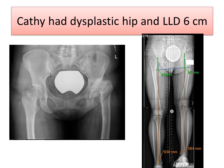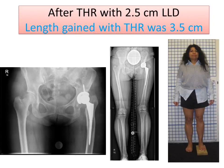I'd like to show you one other example where we treated leg length discrepancy and arthritis with a combination of hip replacement and bone lengthening. Kathy had a dysplastic hip and a leg length discrepancy of 6 centimeters. After the total hip replacement, we were able to gain 3.5 centimeters — we were constrained by the soft tissue envelope and the sciatic nerve — so 3.5 centimeters was achieved in a safe manner, but there was a residual leg length discrepancy of 2.5 centimeters.